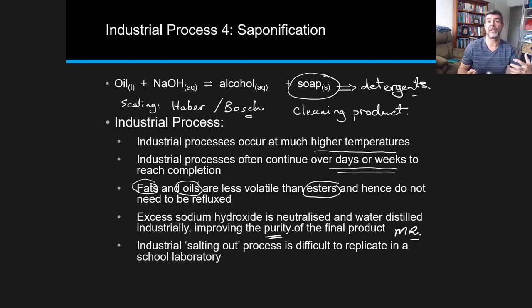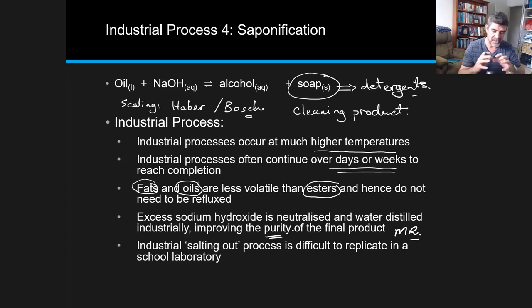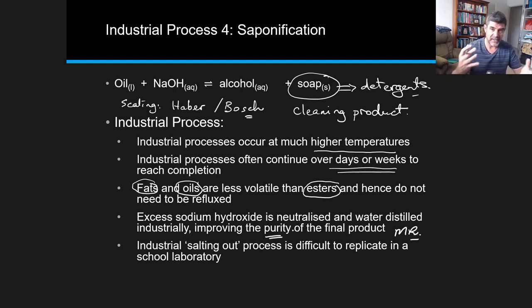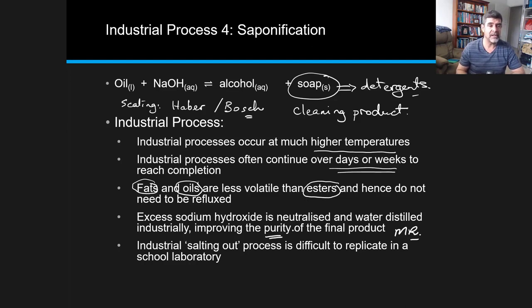We added a high-concentration sodium chloride solution to help salt out the soap that was forming as a scum on the surface. Industrially, that process is much easier to do than in a school laboratory, where we're doing it in a haphazard and fast way just to give you something identifiable as soap. On an industrial level, this is all much more controlled.